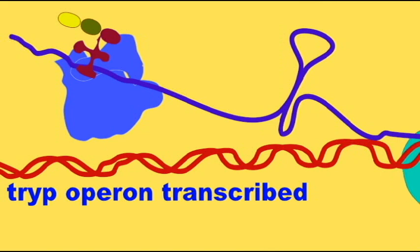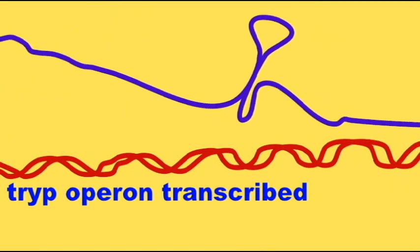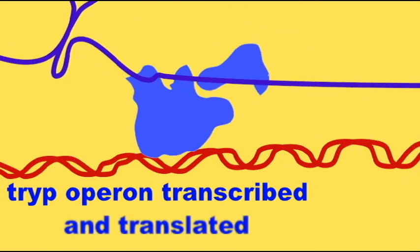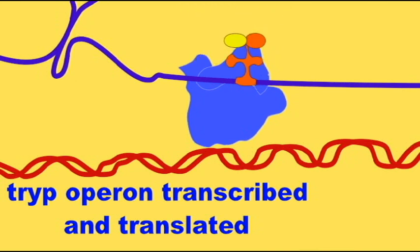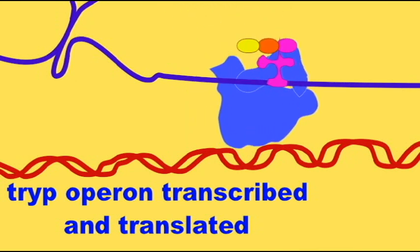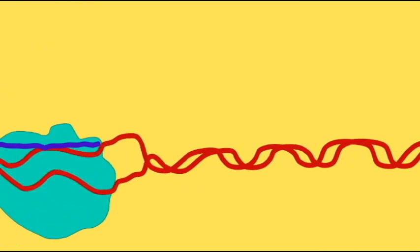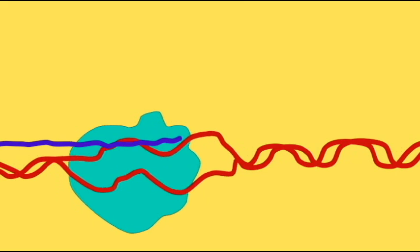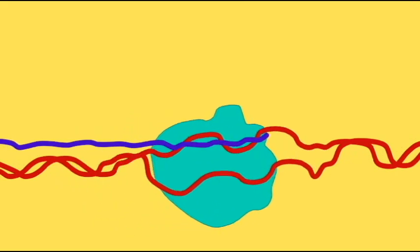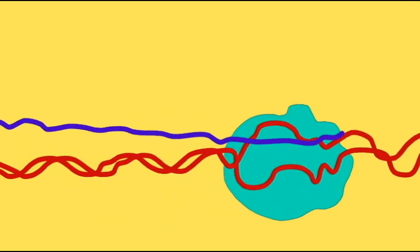Once the anti-terminator loop has formed, RNA polymerase continues transcribing the trp operon and the genes which would make tryptophan, thus a new ribosome can form on a later part of the mRNA and translate new genes which would synthesize tryptophan.